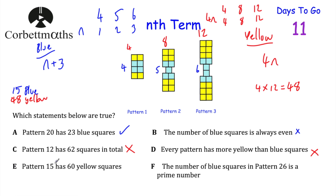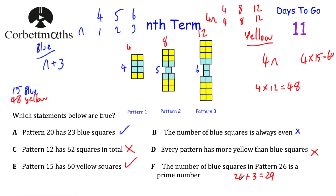Statement E says pattern 15 has 60 yellow squares. The number of yellows is 4n, so 4 times 15 equals 60. That's true. Statement F says the number of blues in pattern 26 is a prime number. Blues: 26 plus 3 equals 29, and 29 is a prime number — so F is true. Therefore the true statements are A, E, and F. And if you've got those, well done.